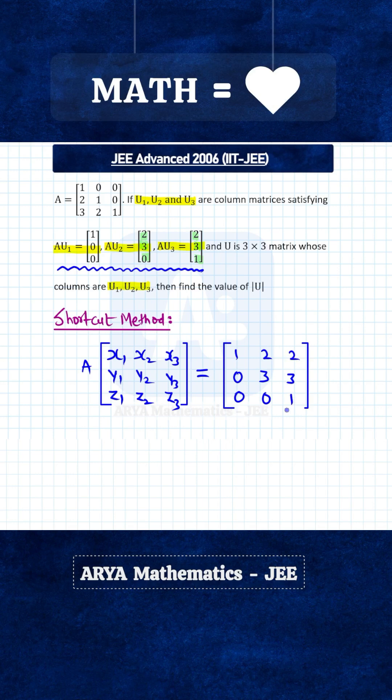And now you can see that when you multiply matrix A with first column you will get this equation A into u1 equals to this column matrix. Similarly when you multiply matrix A with second column you will get the second equation and so on. So this is the matrix equation that we are getting.